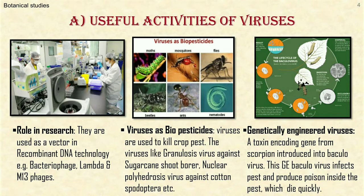Genetically engineered viruses. A toxin-encoding gene from scorpion was isolated by P.V. Chaudhary in 1991 and introduced into Baculovirus. Such engineered Baculovirus infects pests and produces scorpion toxins inside the pest, causing the pest to die very quickly. Again, it is host-specific, so there is no harm to other animals and insects.